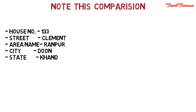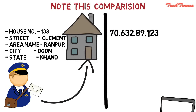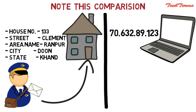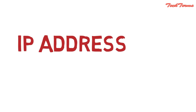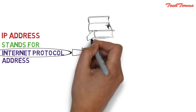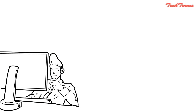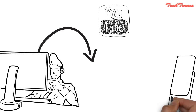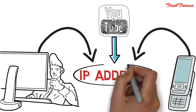Note this comparison. This is your home address, which is identified by your area postman and you get all things delivered to this address. Similarly, this is your computer address, which is identified by the computers on the internet and you get all the downloads available at this computer address. This address is the IP address of your computer. IP address stands for Internet Protocol address. Internet Protocol is a set of rules that makes the internet work. You are able to watch this video on YouTube only because your computer or smartphone has an IP address, and YouTube is sending you all the data related to this video to this IP address.